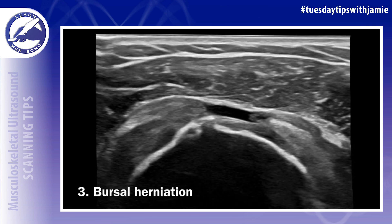Number three: herniation of the subacromial subdeltoid bursa and deltoid muscle, appearing as a focal indentation of bursal fluid or fat into the tendon at the location of the defect.